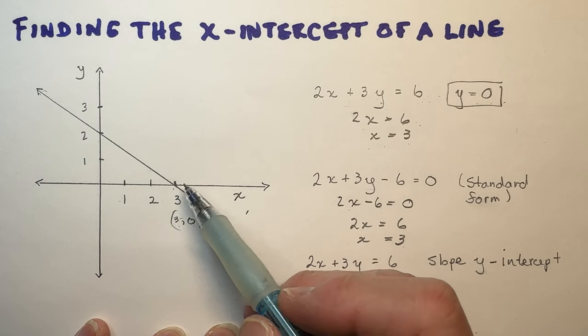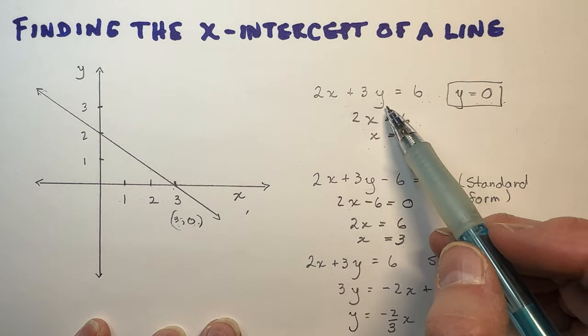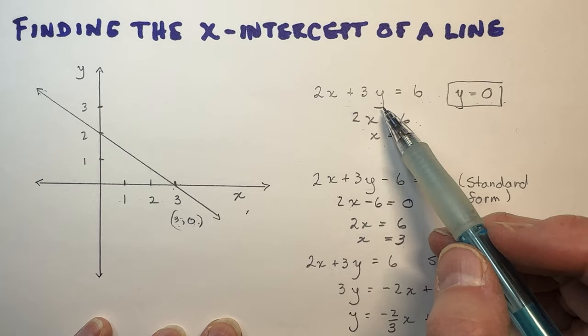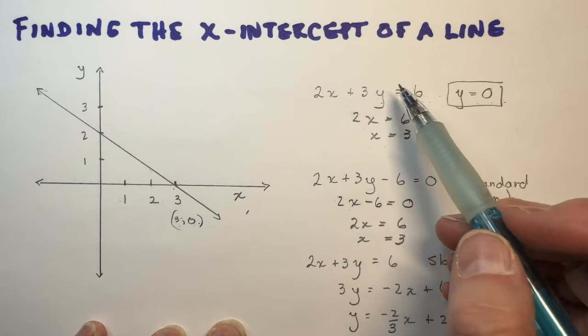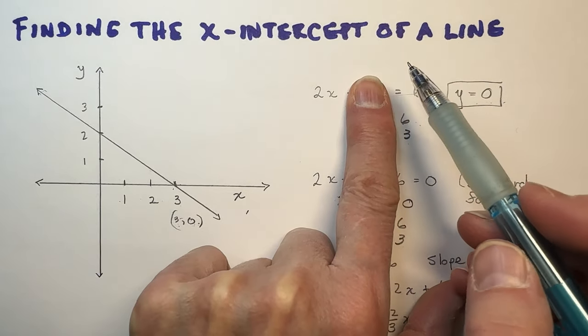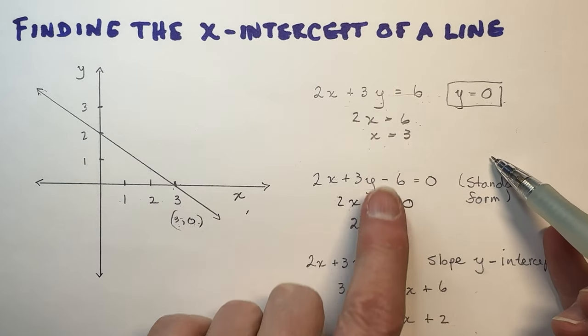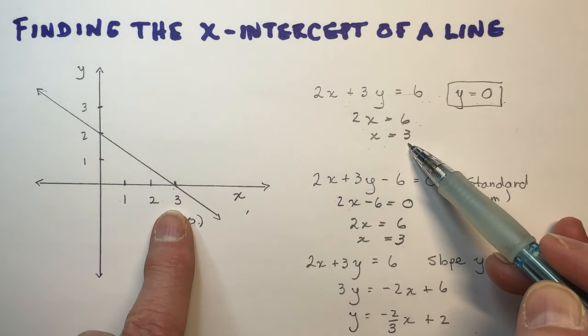That means any time you're trying to find any x-intercept, you want to set y equal to 0. So here's the equation of the line. If I set y equal to 0, I'm left with the equation 2x equals 6. So I solve for x and I get 3.